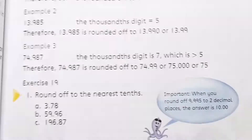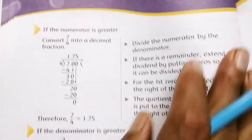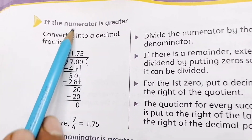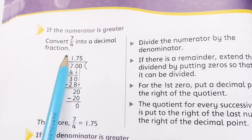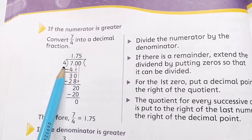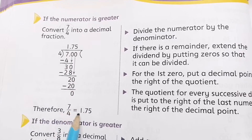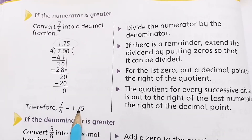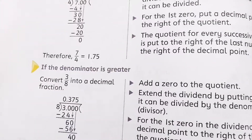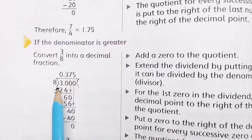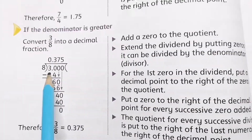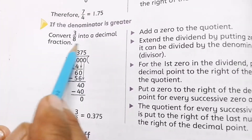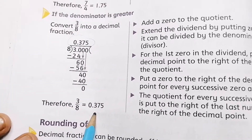Now, how to convert a fraction to a decimal fraction when the denominator is not a power of 10. For 7/4, this is an improper fraction. You divide by putting 7 as the dividend and 4 as the divisor, and the answer is 1.75. For 3/8, you take 3 as the dividend and 8 as the divisor, divide it, and whatever you get is your decimal fraction.